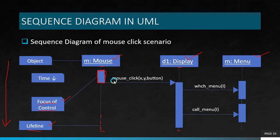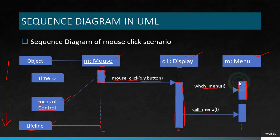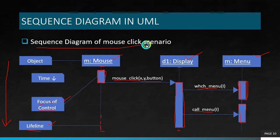The focus of control is the particular region at which the object is currently active. The mouse has a small focus of control because only a small amount of time is needed to invoke the mouse_click function. Considering the mouse click scenario: I call mouse click(x, y, button), after which the display is involved and active during its focus of control. After that, I select the menu and call the menu — these are two different methods. At each time, two menu objects are active: first the select menu object is active, then after call_menu(i), the menu object is active again for that duration.